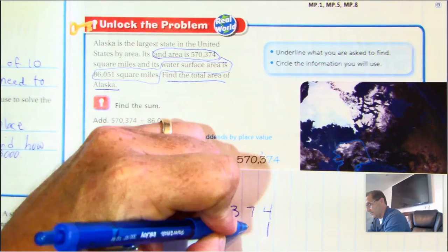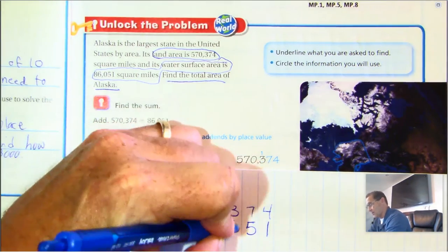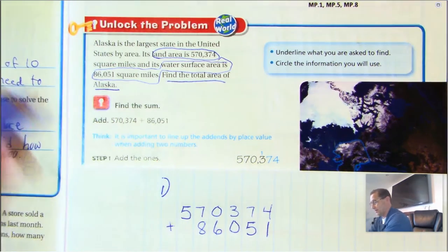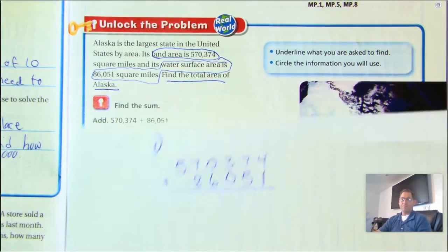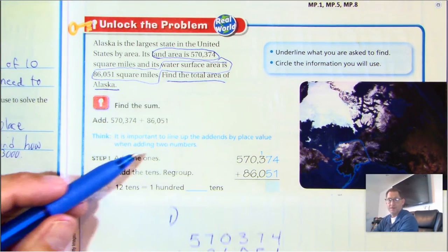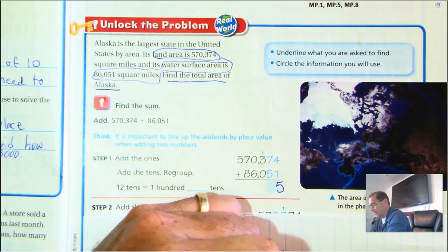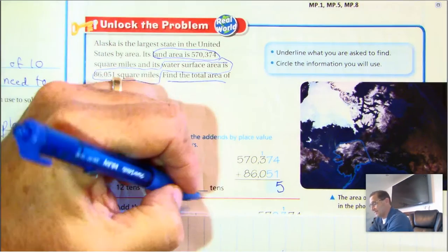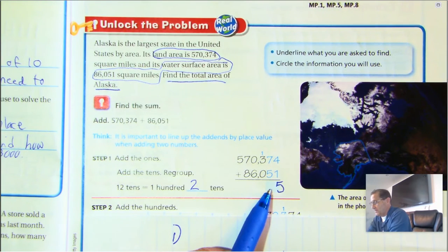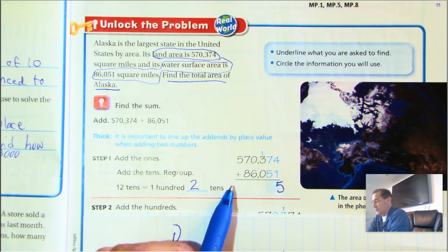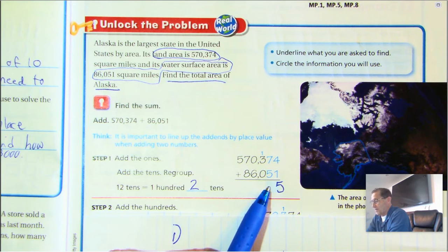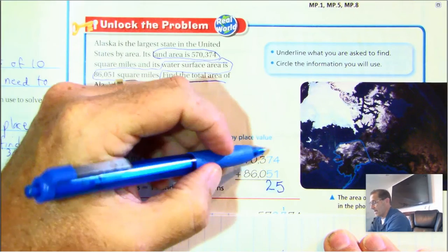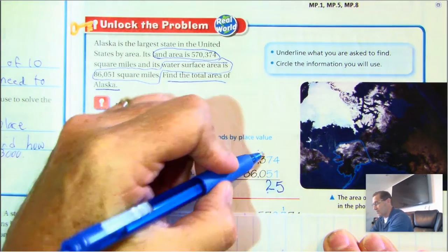I'm going to put 1 under the 4, 5 under the 7, 0 under the 3, 6 under the 0, and 8 under the ten-thousands. So I've lined up my place value. Now in step one, add the ones: four plus one is five, no need to regroup. Seven plus five is twelve tens. Twelve tens is the same as one hundred and two tens — I can't write twelve in any one place value, so when I get to ten or greater, I have to regroup.